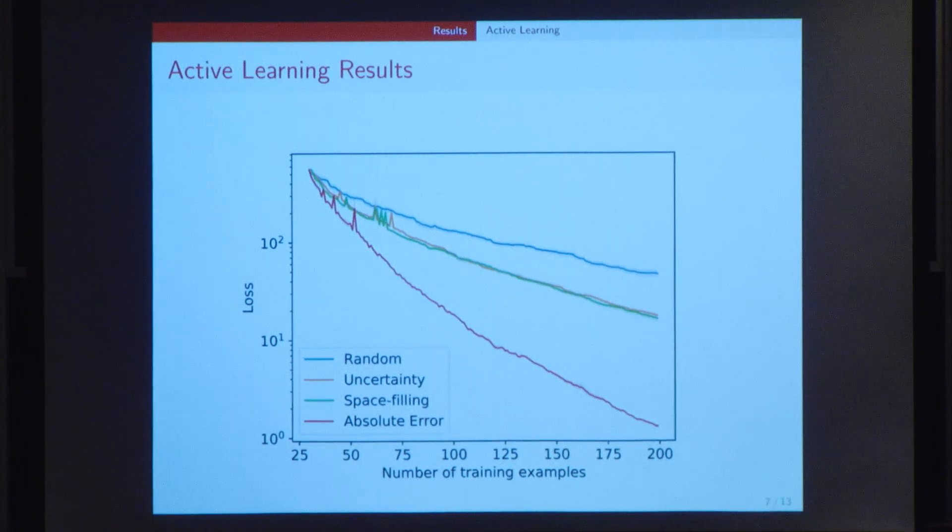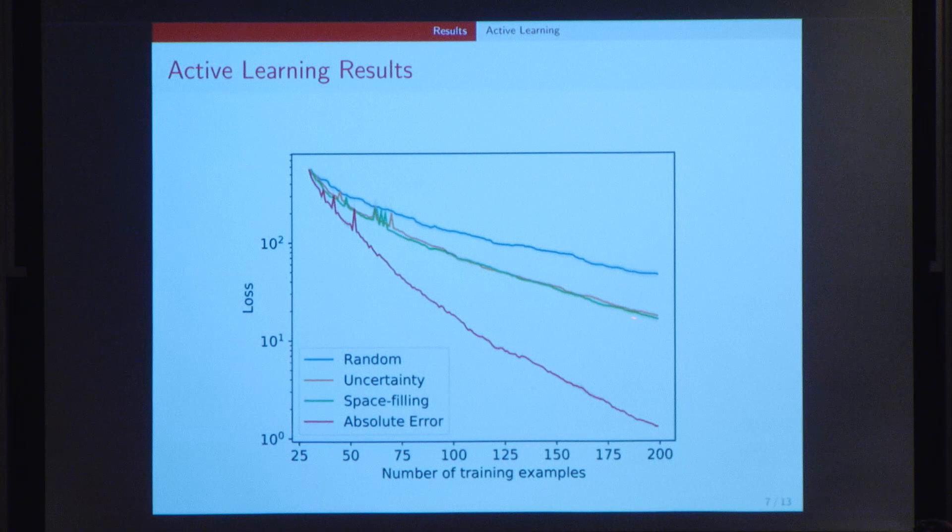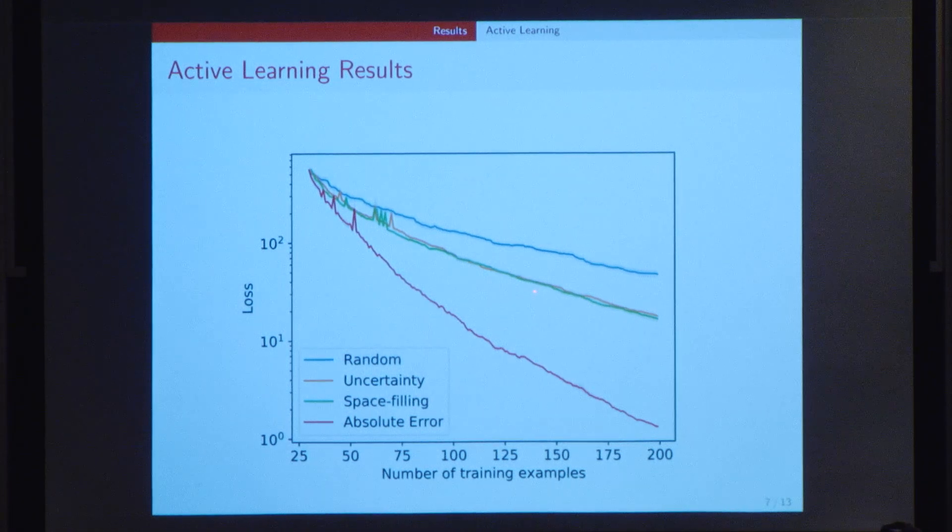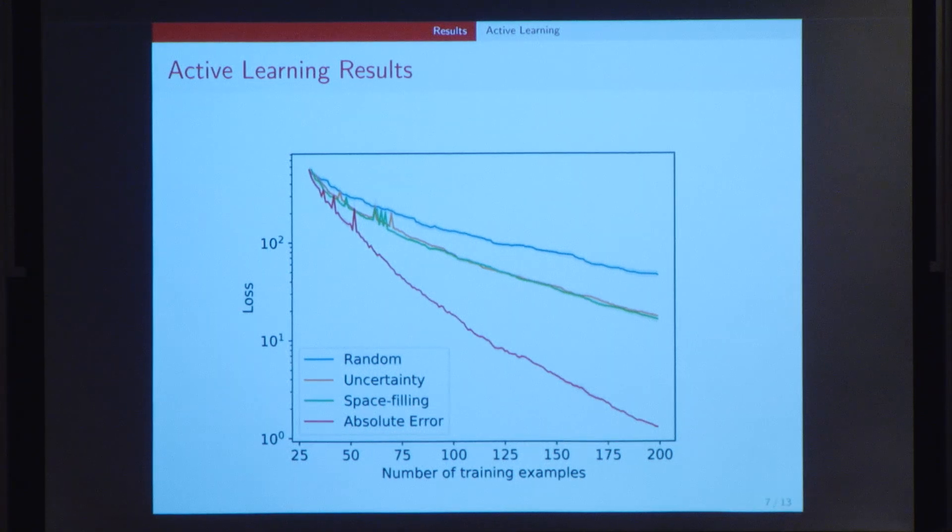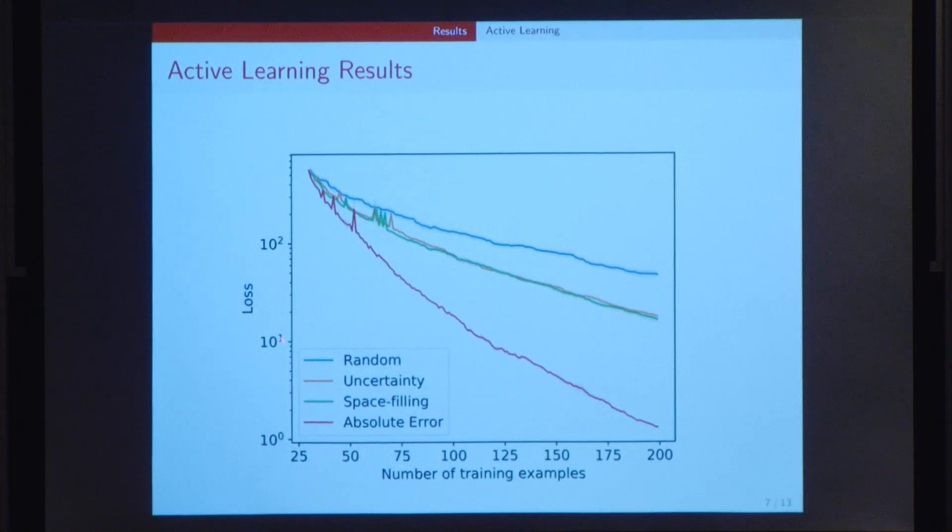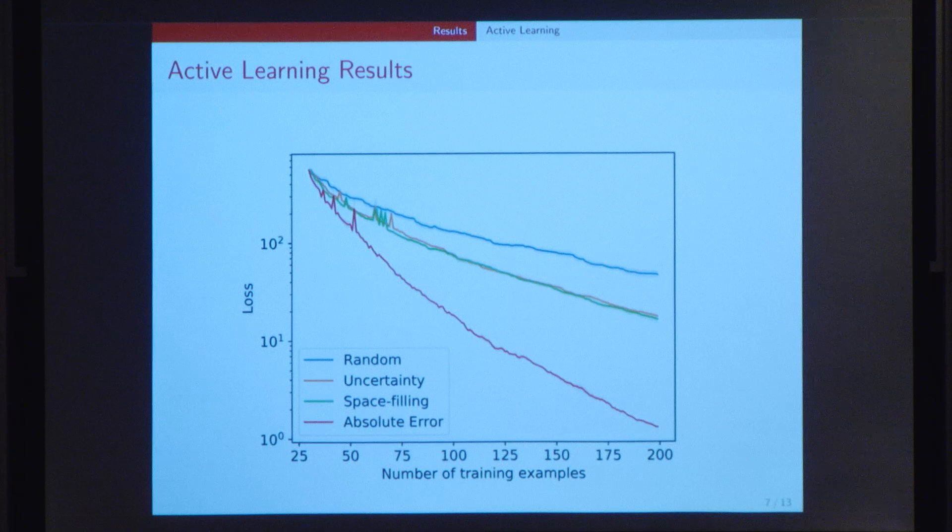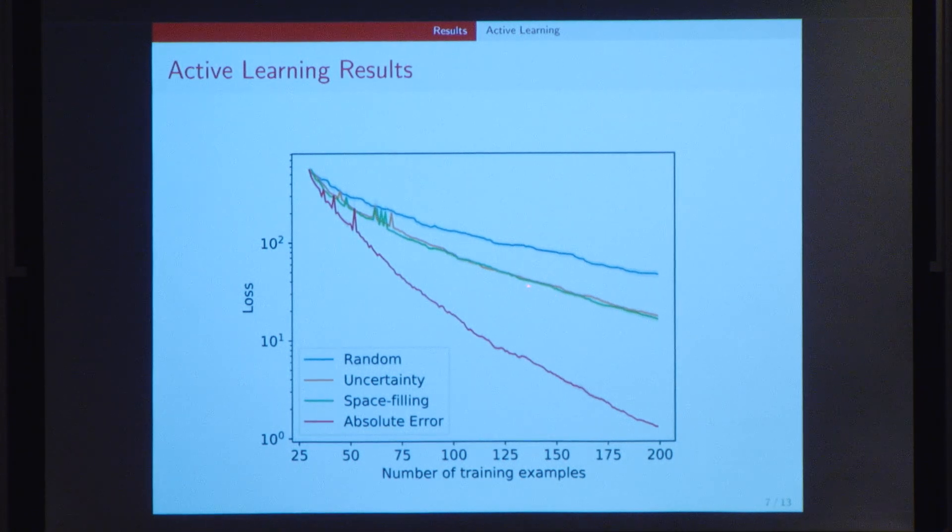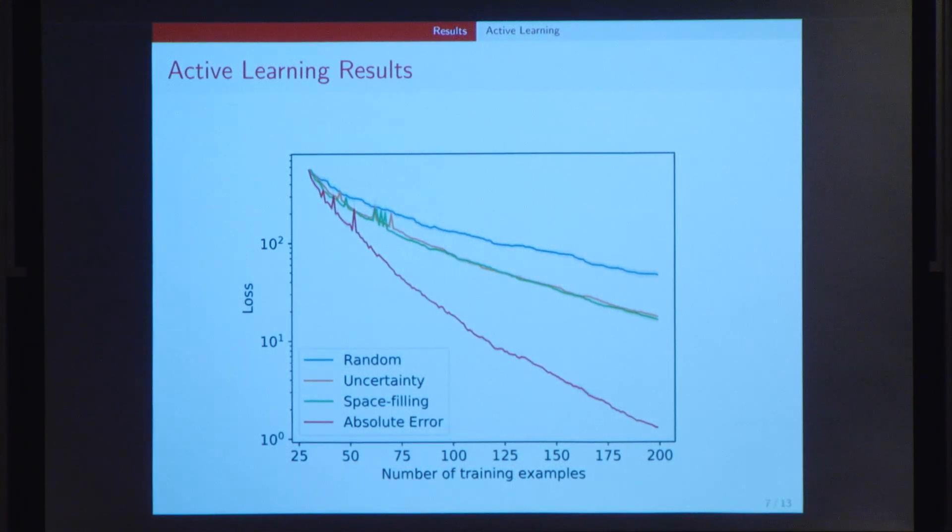This plot shows you the results of active learning. I want you to focus on these two curves here, the orange and the green curve. What you see here are the two metrics used for active learning, uncertainty and space filling, respectively, or the spatial distance. The Y axis is a log scale of the loss, and the X axis is the progression of active learning or the number of training examples. Clearly it shows that both these metrics perform much better than the random sampling method. And although they don't perform as well as the absolute error method, that was an expected result.